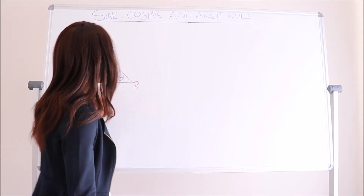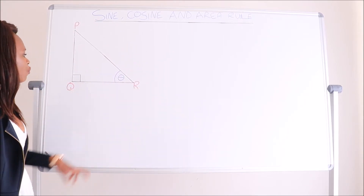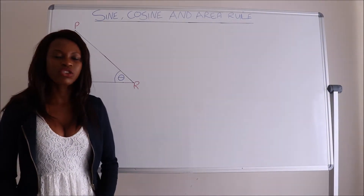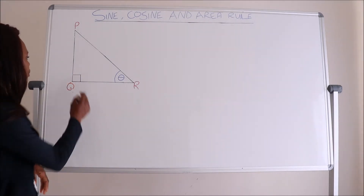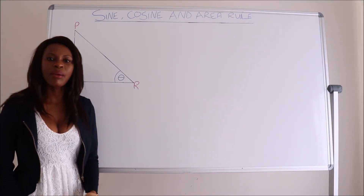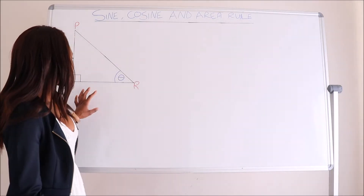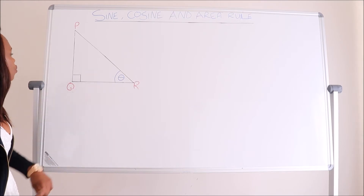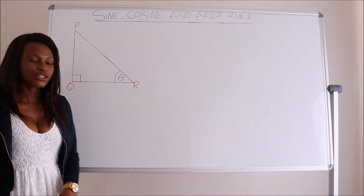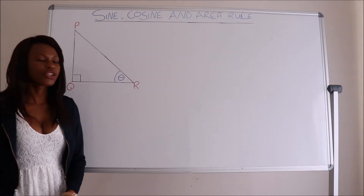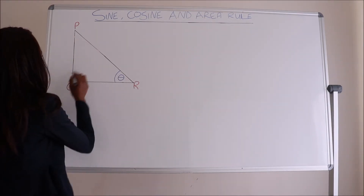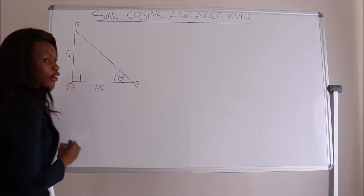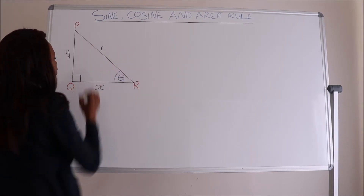We are given a triangle PQR with angle theta. How do we know it's a right angle triangle? It's because of this box symbol here, which tells us our triangle is a right angle triangle. With this triangle, our angle theta is opposite to the side PQ, adjacent to the side QR, and the hypotenuse is PR. We show the opposite with Y, the adjacent with X, and the hypotenuse with R.